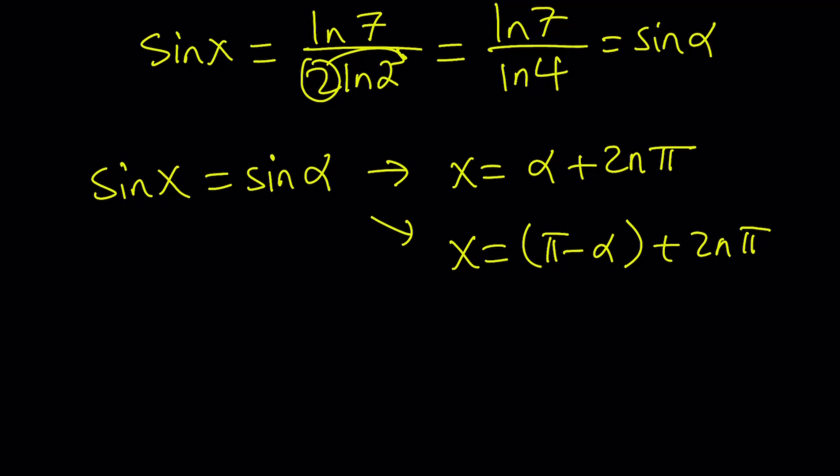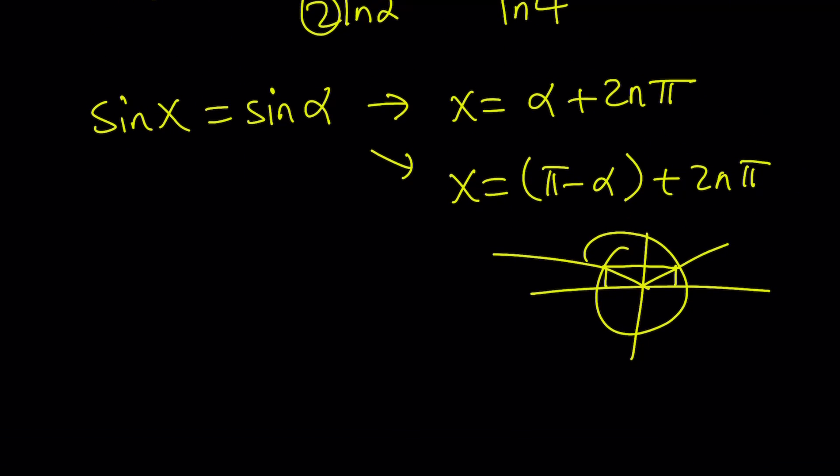x equals pi minus alpha plus 2n pi. Because you got to realize there are two angles. One, if alpha is acute, of course, one being in the first quadrant, the second one being in the second quadrant, whose sines are the same. So if you have two supplementary angles, their sines are equal. Like 30 and 150 degrees.